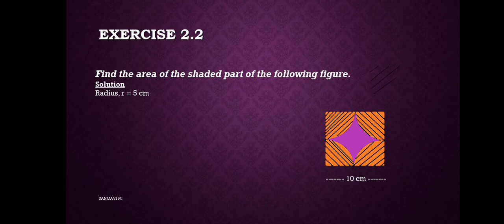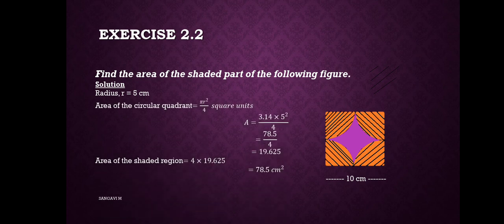From this figure, we find r equals 5 centimeters. So we need to find the circular quadrant area. Its formula is πr² divided by 4 square units.